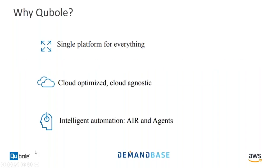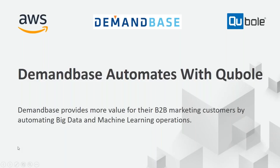Why Kubel? It is a single platform for everything in big data. We are cloud-optimized — we've taken open-source versions of all these products and optimized them to run well in the cloud. We automate — the idea is to make it easier, help customers drive down total cost, and speed up time to value. That's why Kubel. I'll now pass it over to Seth.